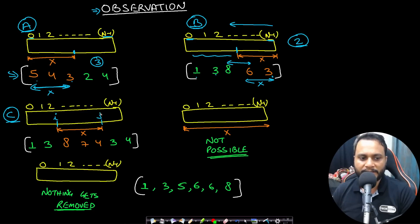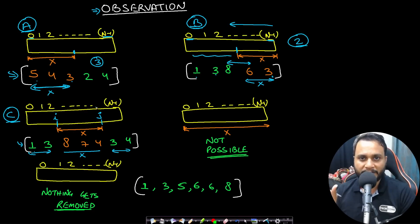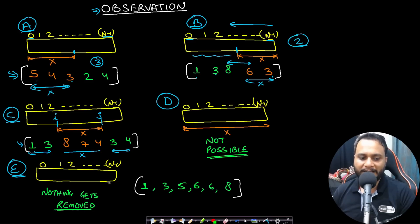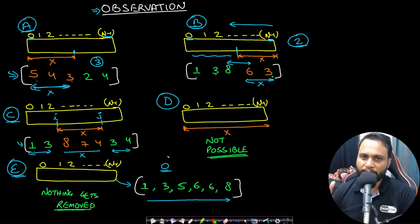In case C, you remove a slice from index i to index j in the middle, leaving items on both the left and right. For example, keeping '1 3' on the left and '3 4' on the right, and removing '8 7 4' from the middle. Case D — removing the entire array — is not possible, as shown earlier. Case E — removing nothing — is perfectly valid: if the array is already non-decreasing, return 0.